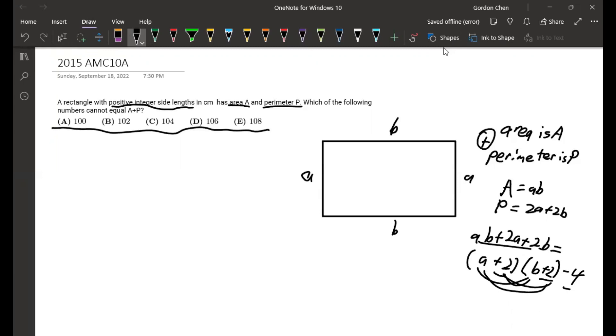If we take a look at all the answer choices, if we add 4 to the answer choices we would have like 104. If we divide it by 2, basically what we're trying not to have is if we divide it by 2 then it'll be a prime, because if that happens then A plus 2 and B plus 2 wouldn't be possible, because a prime can't be factored and we're given that it's positive integer side lengths.